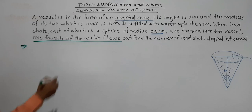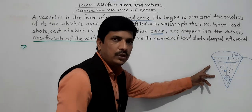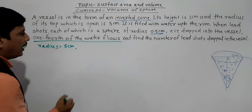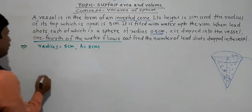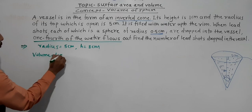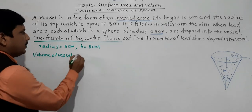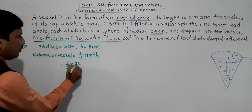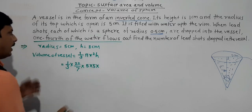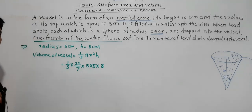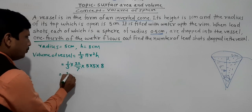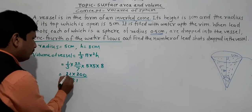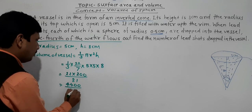First, finding the volume of the conical vessel: radius = 5 cm, height = 8 cm. Volume of vessel = (1/3)πr²h = (1/3) × (22/7) × 5 × 5 × 8. That is 22 × 25 × 8 divided by 21, giving 4400/21 cm³. So that is the volume of the conical vessel.